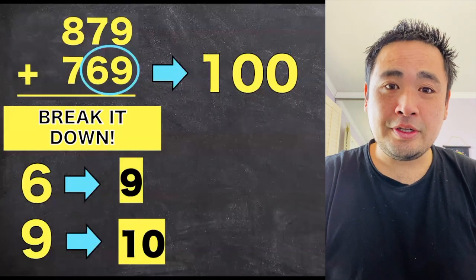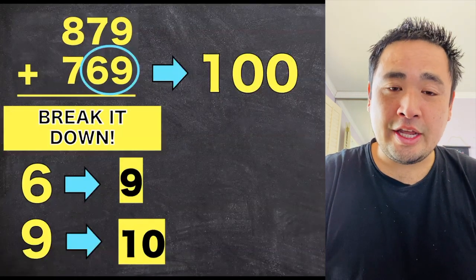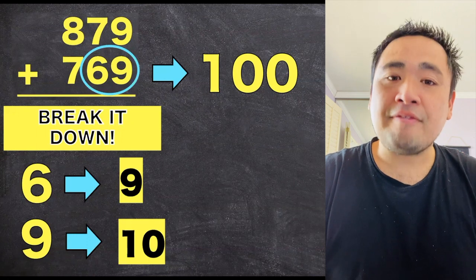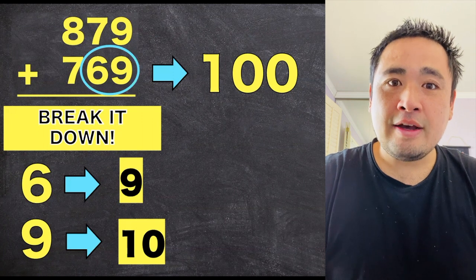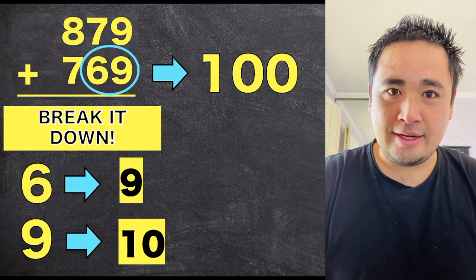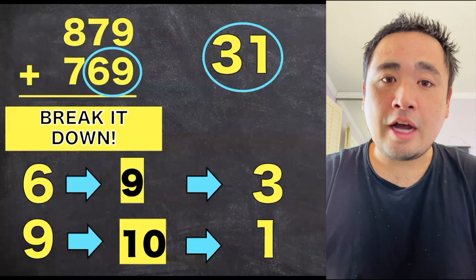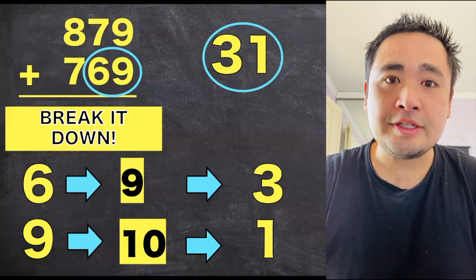So this is really simple to do. Take the tens digit, in which our case is 6, and find the number that adds to 9. For the ones digit, in which our case is 9, find the number that adds to 10. Based on that, the complement we need in our problem is 31.